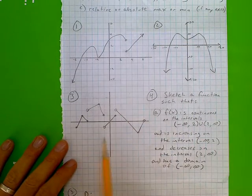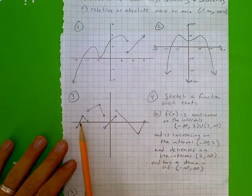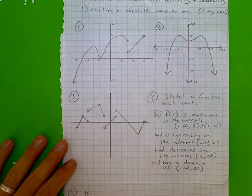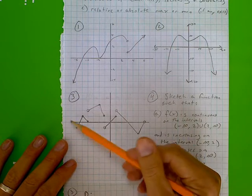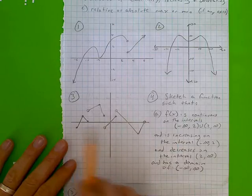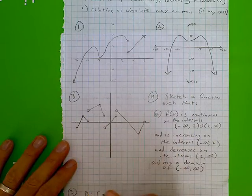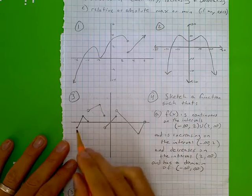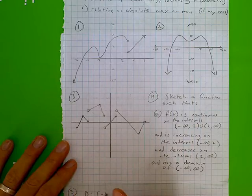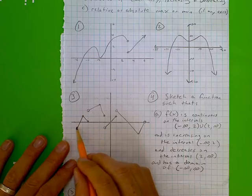Recall the domain is the collection of all the x-values that get used somewhere by my function. So the furthest left x-value that gets used would be this x-value right here, and that is negative 6. So our domain is going to start at negative 6, and we'll include negative 6 because that is a closed-in dot — in other words, there is actually a point that has an x-value of negative 6, that one right here.